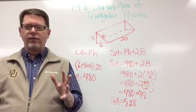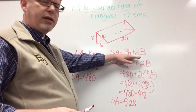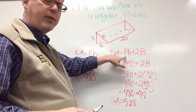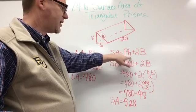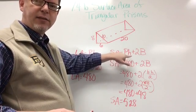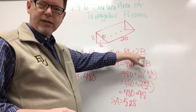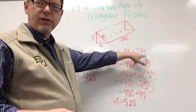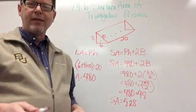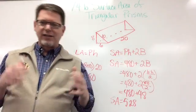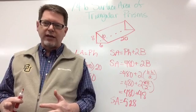Let me quickly go over the formula one more time. Capital PH plus 2B: capital P is the perimeter of the base, H is the height of the entire prism, and B is the area of the triangular base, calculated as b times h over 2. The formula is on your formula chart and we'll practice a lot in class.